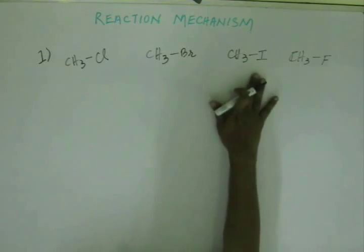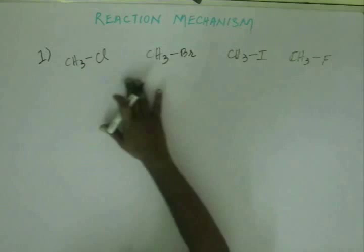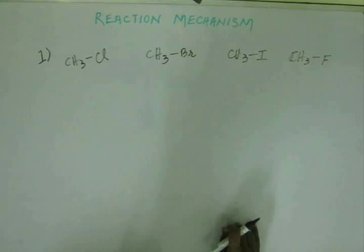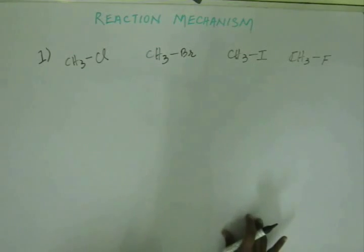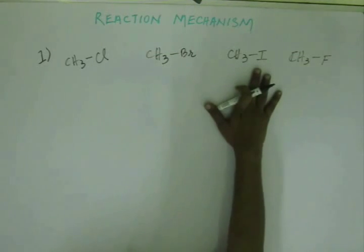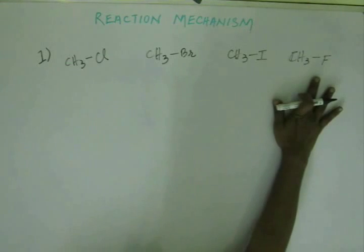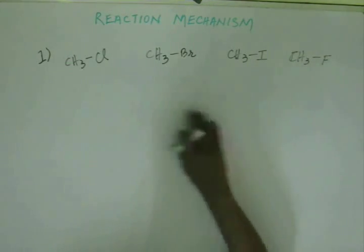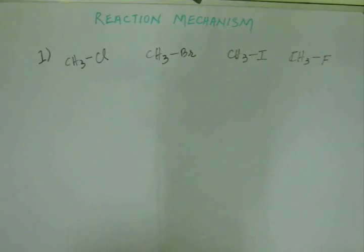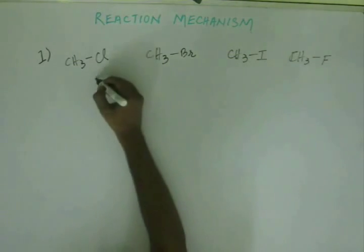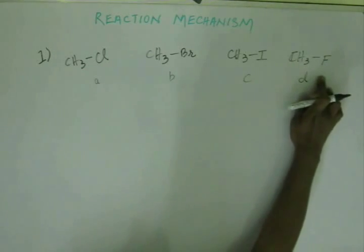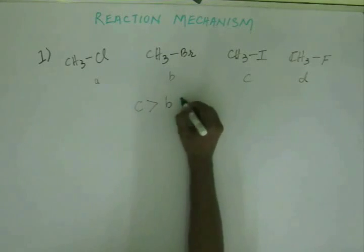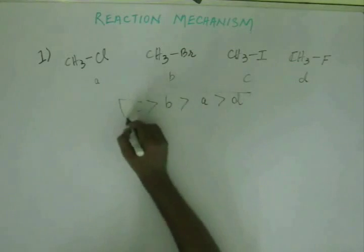Here, Cl⁻, Br⁻, I⁻, and F⁻ will leave out. The most stable ion will be the best leaving group. As the size of the ion increases going down the same group, the size of the atom and its orbital increases, and as the size of the orbital increases, the electron density decreases, making it more stable. That is why HI is the strongest acid, followed by HBr, then HCl, while HF is weak because F⁻ is much less stable. So the order is I⁻ > Br⁻ > Cl⁻ > F⁻, making the order of reactivity C > B > A > D.